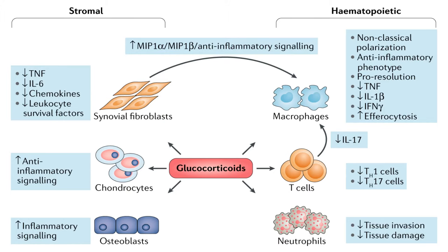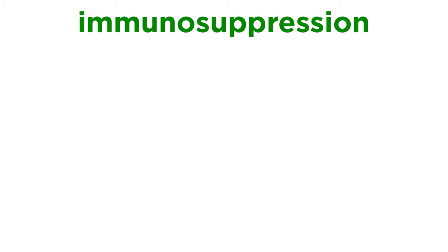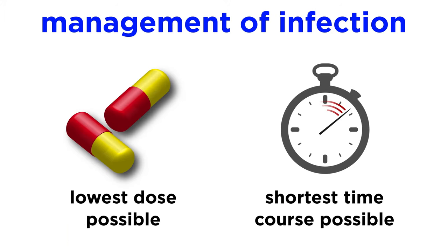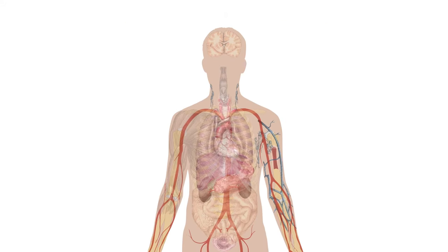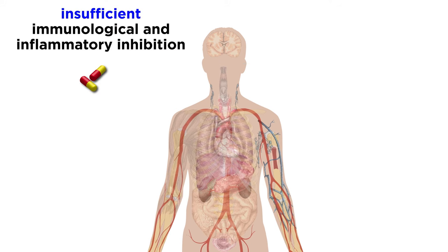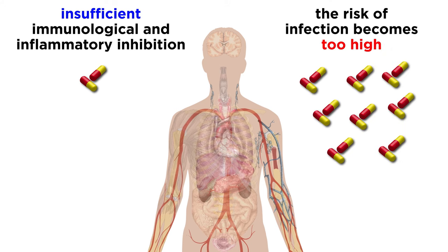It's worth bearing in mind that we are just scratching the surface on the diverse signaling cascades that glucocorticoids are involved in, as we are discussing only the most important signaling mechanisms. Due to the immunosuppressive effects that glucocorticoids have, the propensity for infection from both readily infectious and opportunistic pathogens is considerably increased, and this is a key side effect. Infection can be managed by using the lowest dose possible that is capable of achieving the desired therapeutic effect, and the shortest time course of drug exposure that is possible. Using glucocorticoids to pharmacologically modulate immunosuppression and inflammation needs to be carefully balanced: if levels are too low, sufferers won't receive enough inhibition; if too high for too long, the risk of infection will be too high.